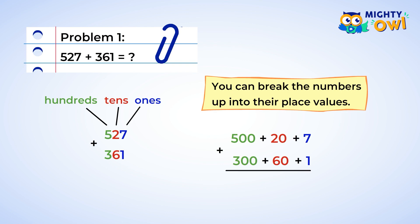Now we can add the values. Start with the ones. Seven plus one is eight. And now the tens. Twenty plus sixty is eighty. Great job. Keep going.